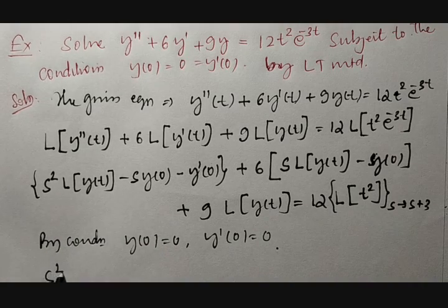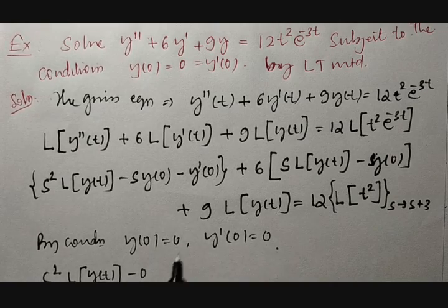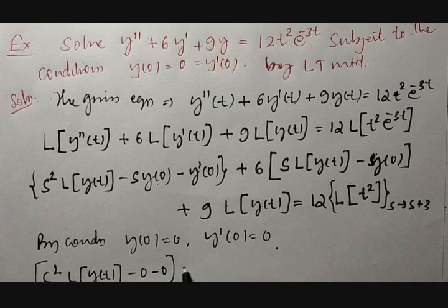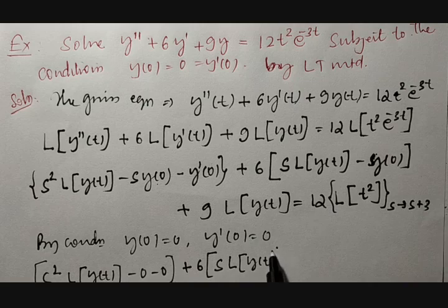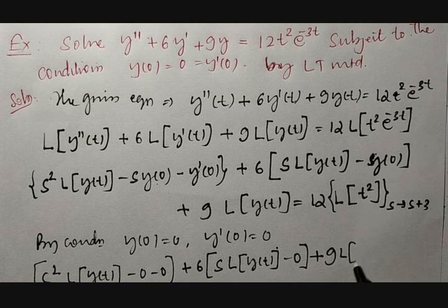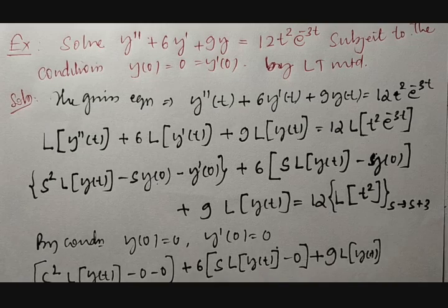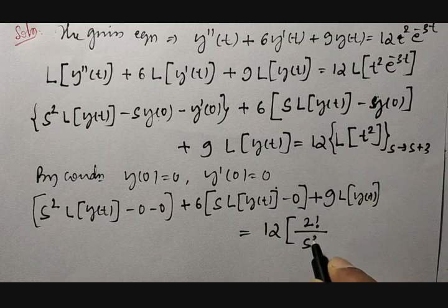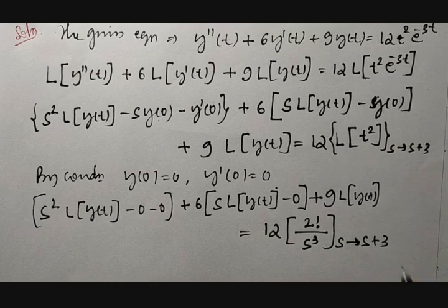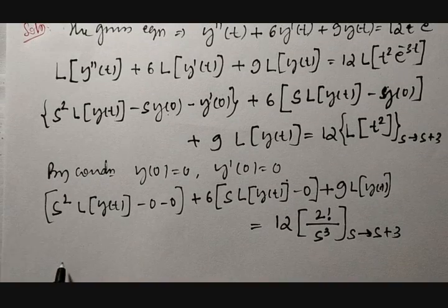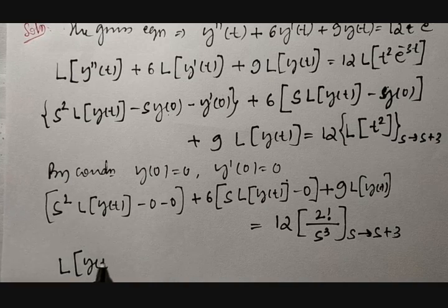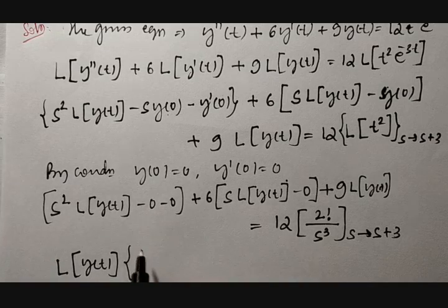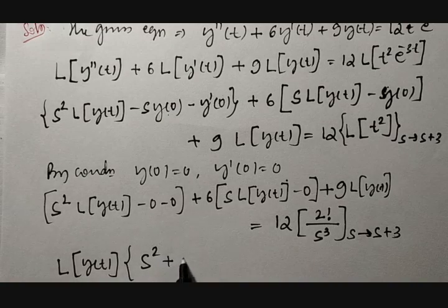Substituting the conditions, the equation becomes s² · L{y(t)} − 0 − 0 + 6[s · L{y(t)} − 0] + 9 · L{y(t)} = 12 · L{t² · e^{-3t}}. What is L{t²}? L{t²} = 2! / s³, where s is to be replaced by s + 3. Taking L{y(t)} as the common factor, inside the bracket we get s² + 6s + 9.